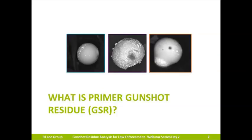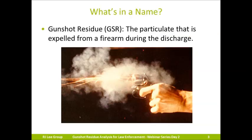Last week, Mr. Gorski went over the collection of gunshot residue. He covered the who, what, and how of collections. I'm going to start by giving you a background on gunshot residue — what exactly is GSR, and how is it created? In the broadest sense of the word, gunshot residue is all particulate that is expelled from a firearm during discharge. For the purposes of this webinar, when I refer to gunshot residue, I am specifically talking about primer gunshot residue.